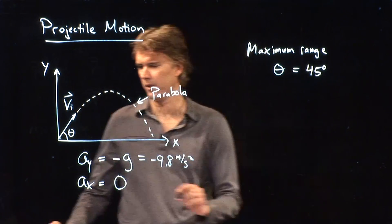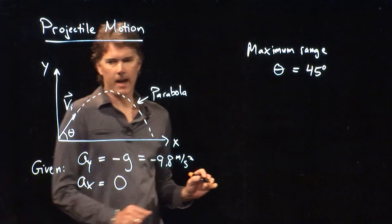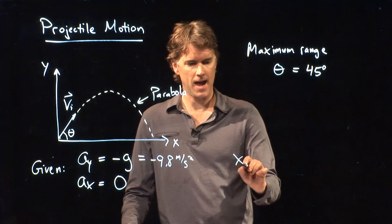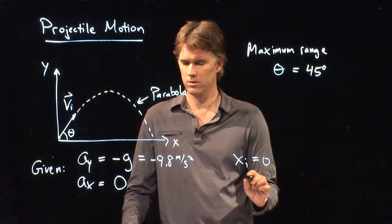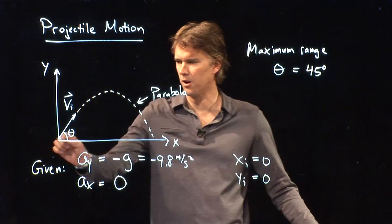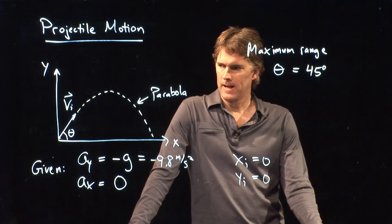What else do we know? These are some of the givens. And some of the other givens are the following. We can say x initial is zero. We can say that y initial is also zero. It starts there at the origin.